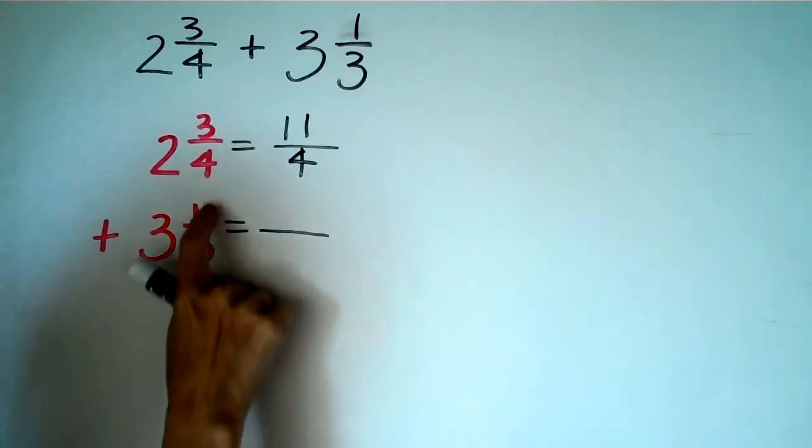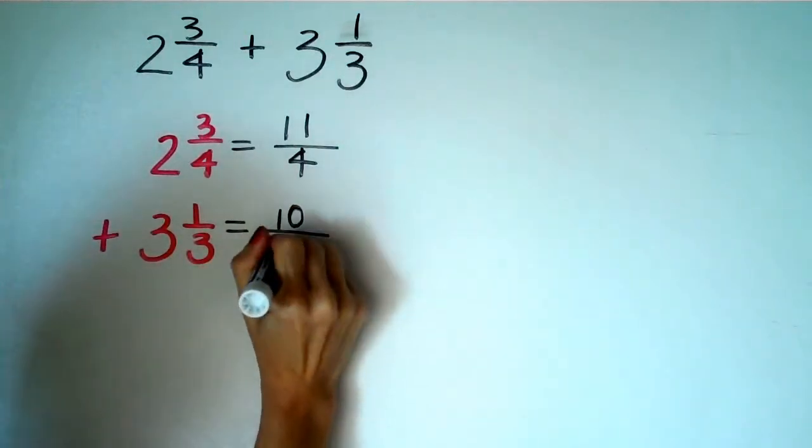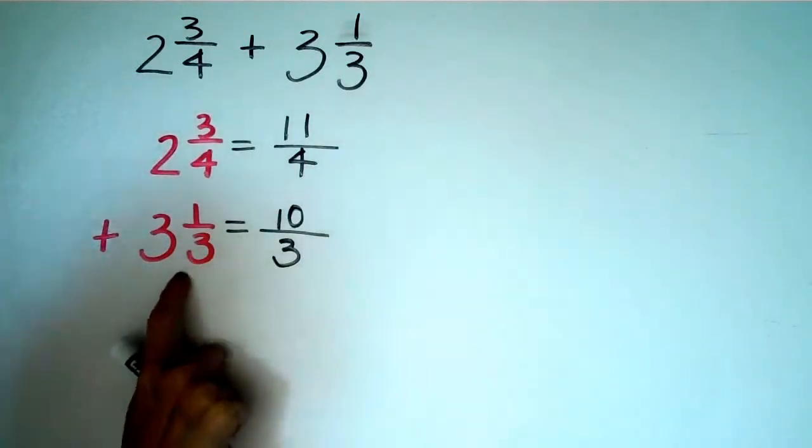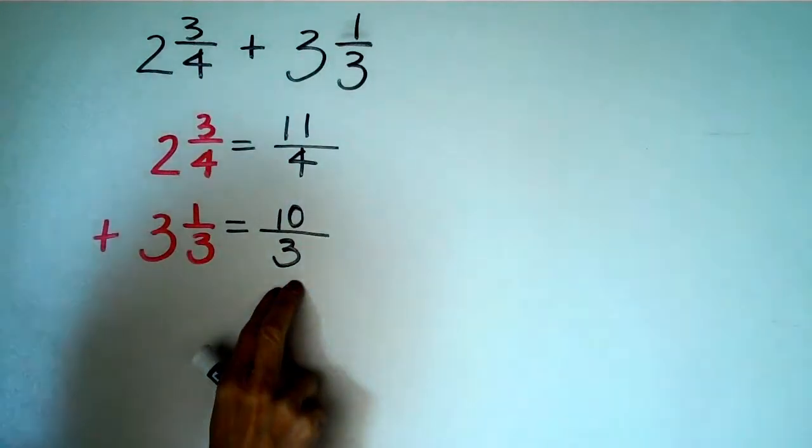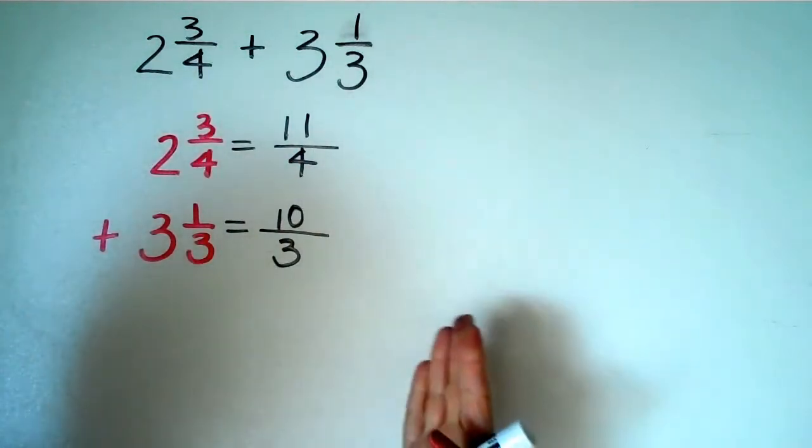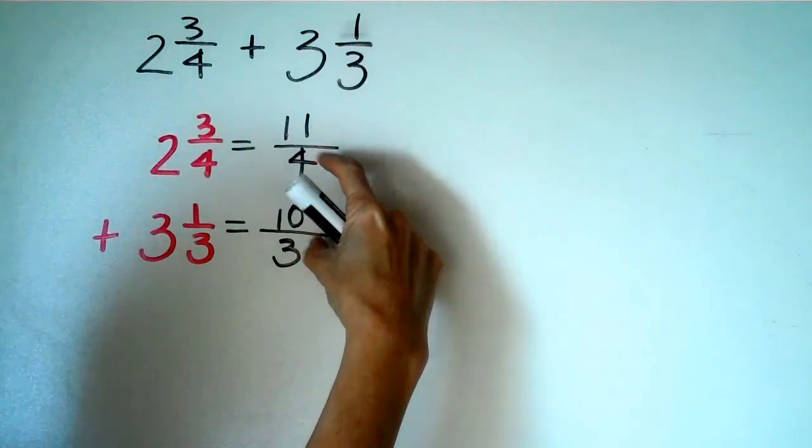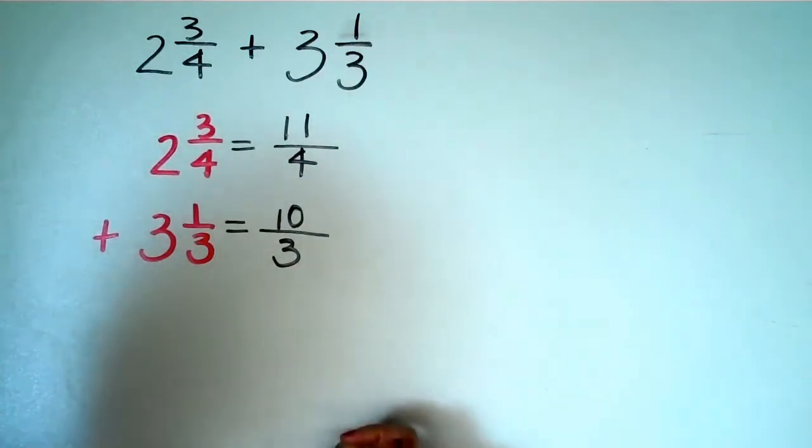Three times three is nine plus one is ten over three. So I just changed them from mixed numbers to improper fractions. But I still haven't even added anything. And I can't add anything yet because I see that I have two different denominators.